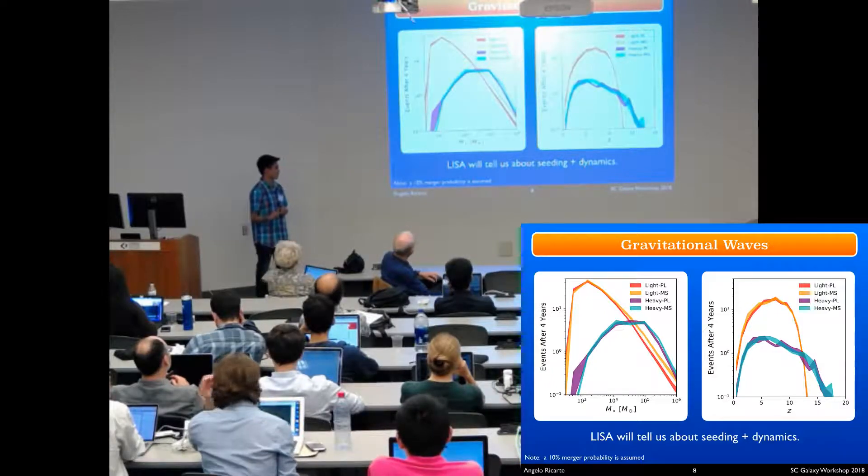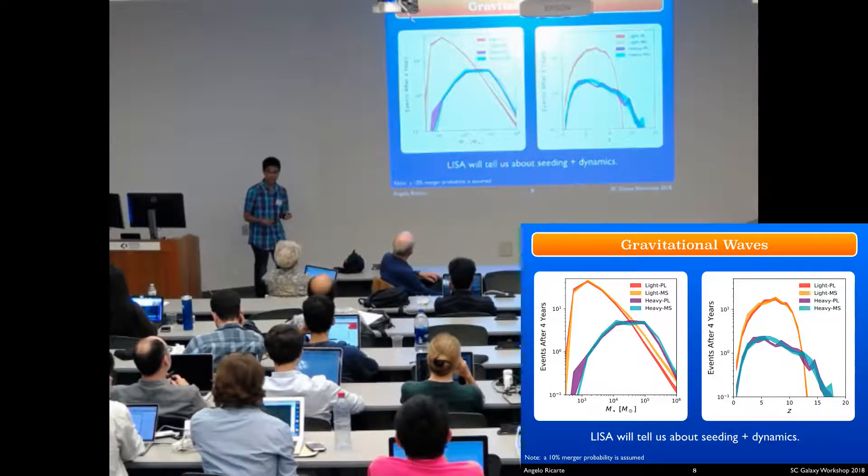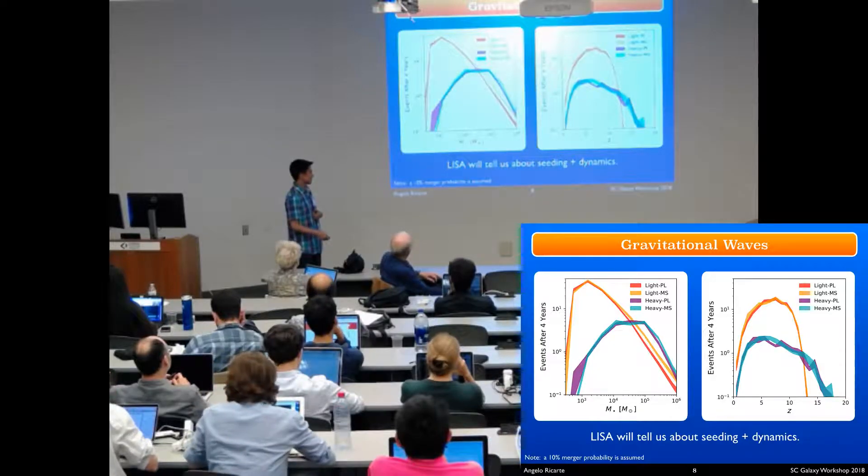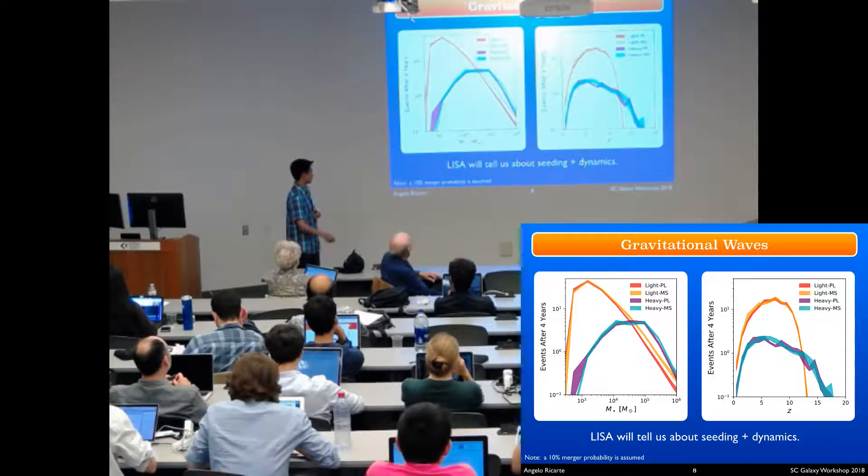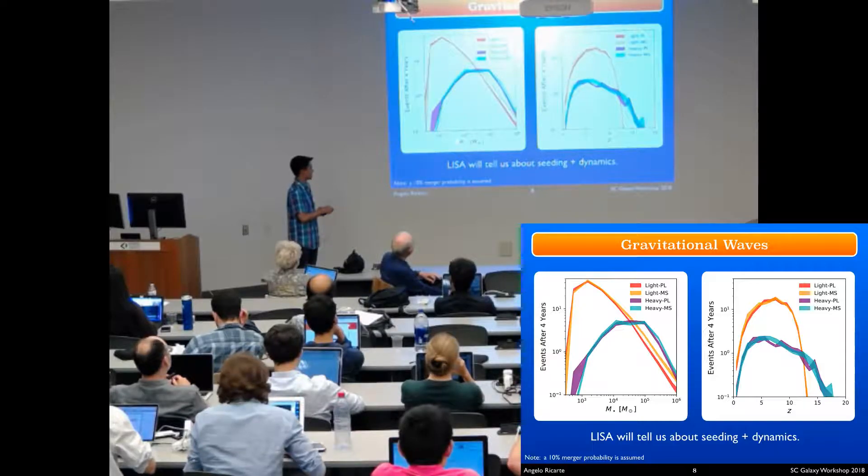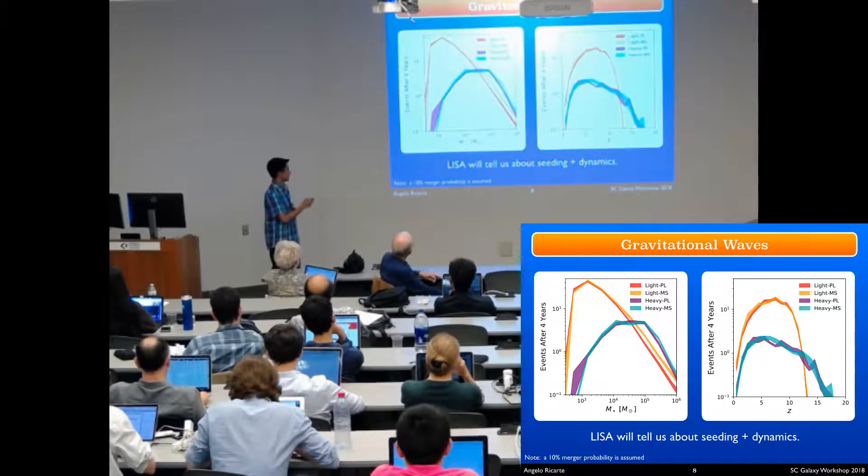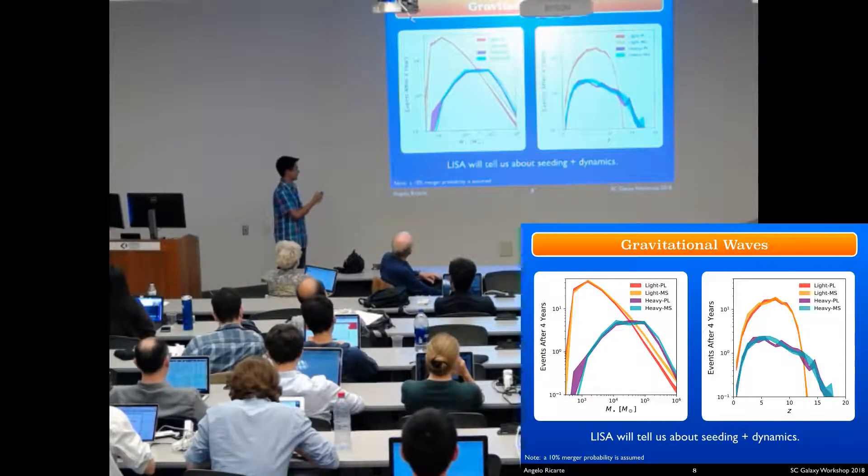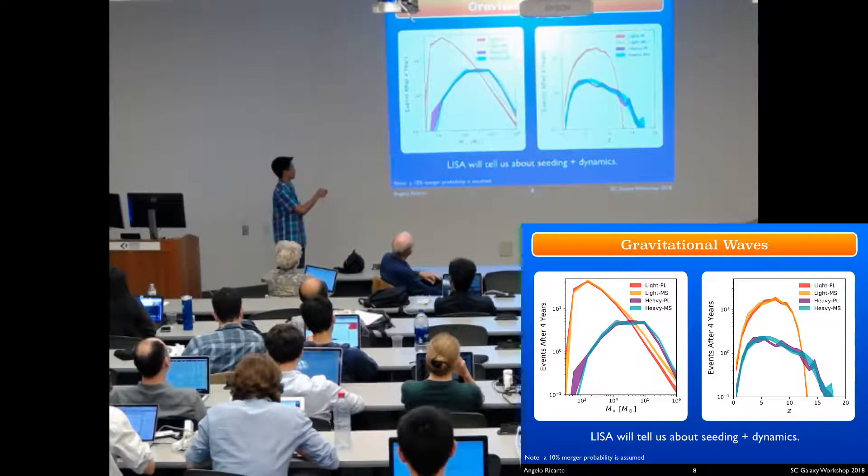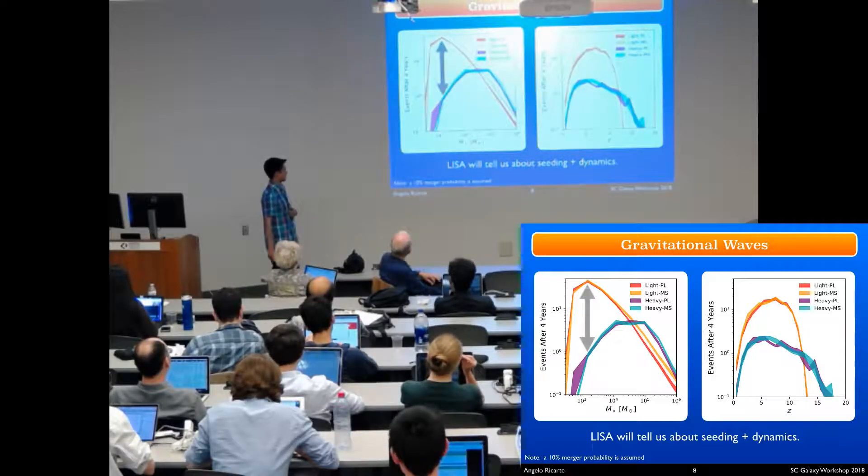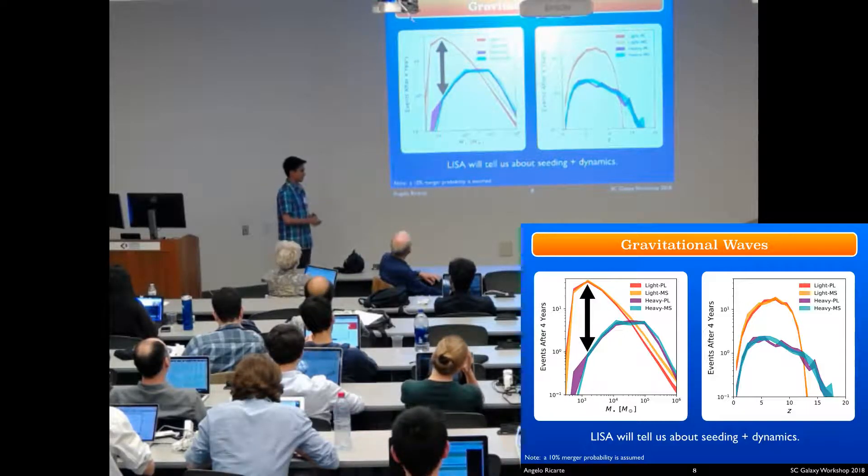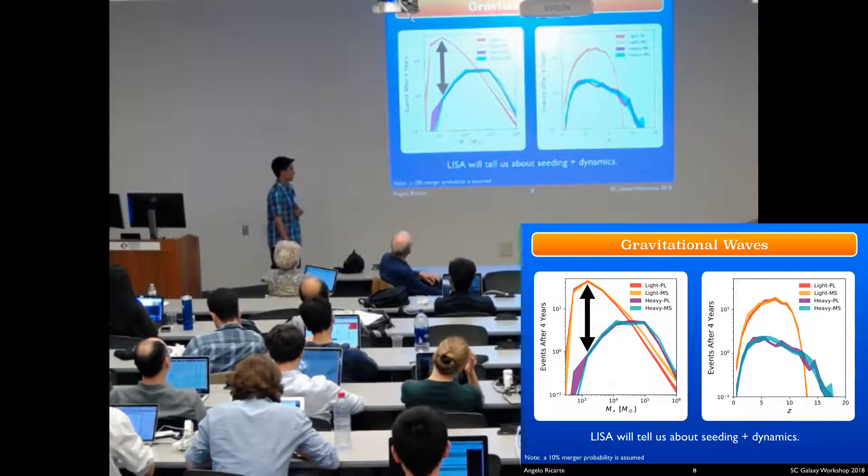Gravitational waves will also give us a very clear picture into the seeding mechanism. Here I've done distributions as a function of chirp mass on the left and redshift on the right. Essentially, if light seeds dominate the creation of black holes, you should see a power law that just keeps going to lower masses. Whereas for the heavy seeds, you should see a drop-off that is just based on the heavy seed IMF.